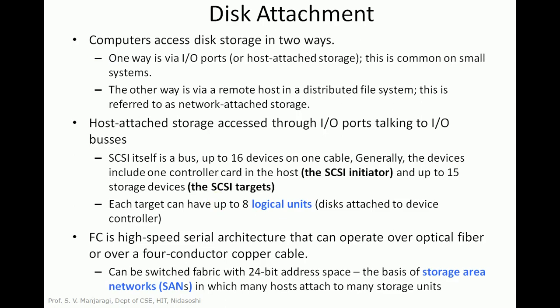Now let us look at disk attachment — how disks are attached to the computer system. Computers can access disk storage in two ways. One way is through IO ports, which exists in smaller systems like desktops; this is called host attached storage, where the storage device is present in the computer system attached to the CPU via an IO port. The other way is via a remote host in a distributed system, where the storage device is attached to the network and connected to computer systems through the network; hence they are referred to as network attached storage.